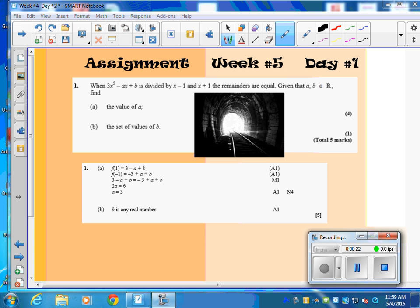So let's take this one. This is number one, 3x to the fifth minus ax plus b. And we're dividing x minus 1 and x plus 1, and the remainders are equal. They're not saying what it is equal. They're saying that they are equal.